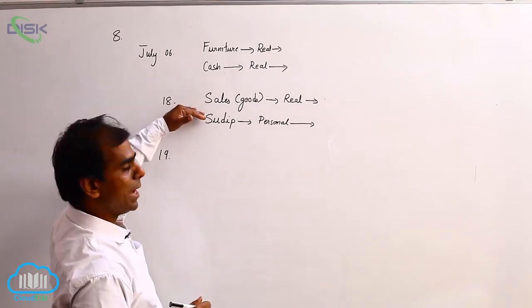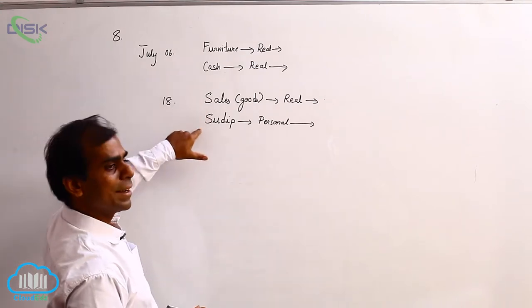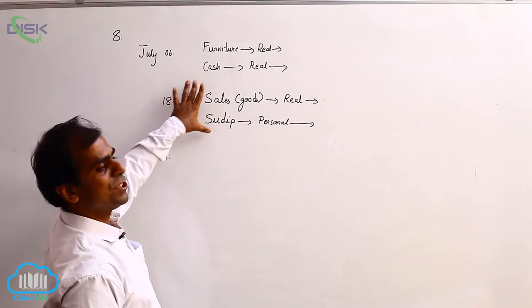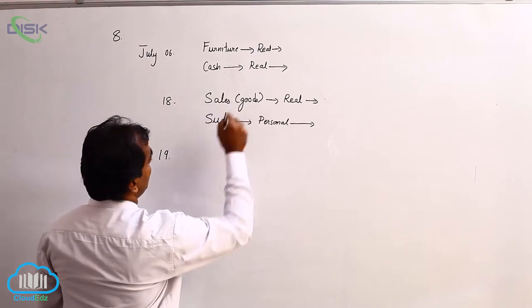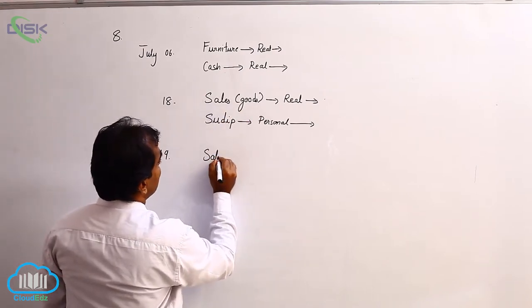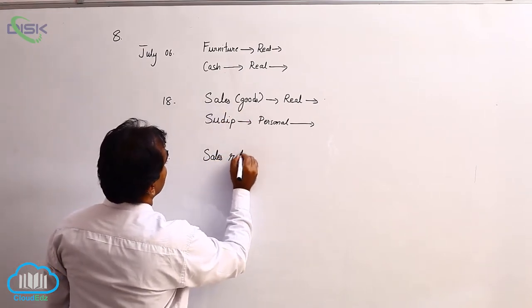So in this case, you compare. In 18th we sold goods on credit. Some portion of it which they did not like or are damaged is returning back. So we are getting back the sold goods, so we will treat it as sales returns.